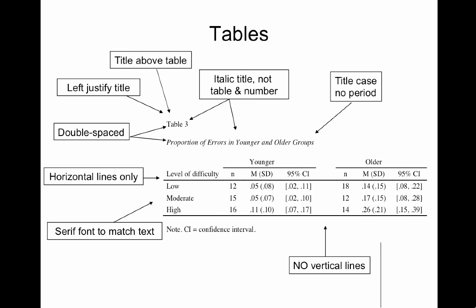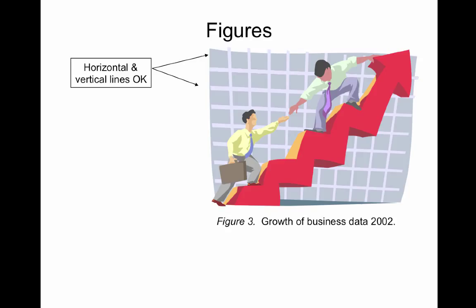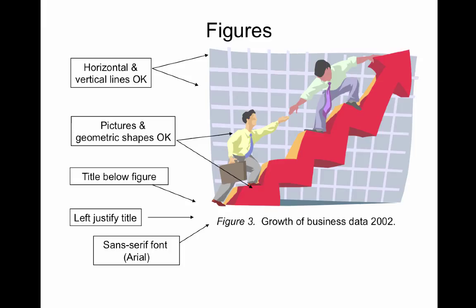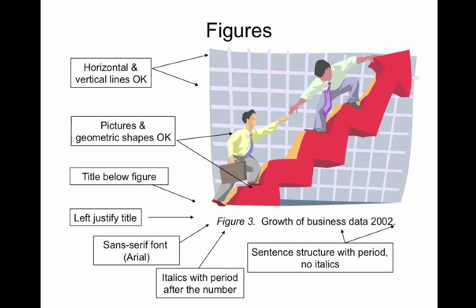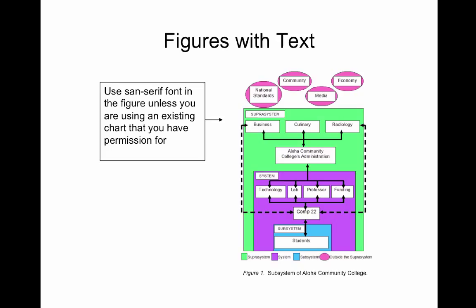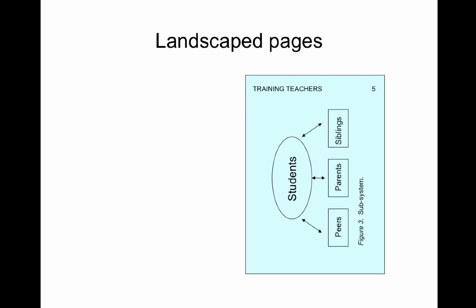Figures: it's okay to use both horizontal and vertical lines in figures, as well as pictures and geometric shapes. In this case, the title goes below the figure. Notice it's only one line. You want to left-justify this title and use a sans-serif font — like Arial or Helvetica — both for the title as well as any text that's in the figure. The words figure and the number are in italics, and there's a period after the number. Use sentence structure with a period and no italics for the title of the figure. Legends are part of the figure and should be the same font and size.